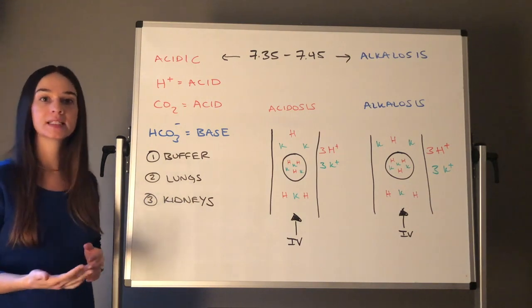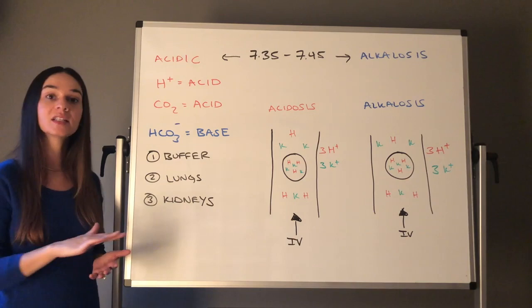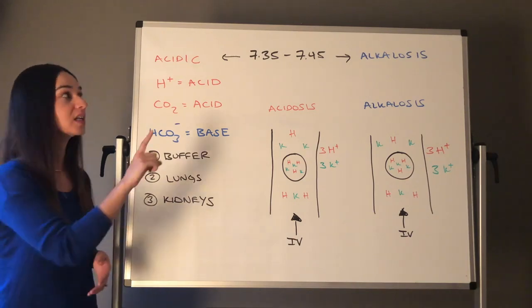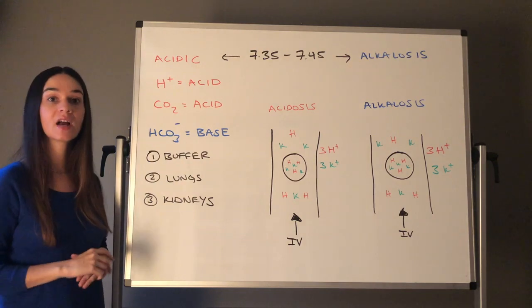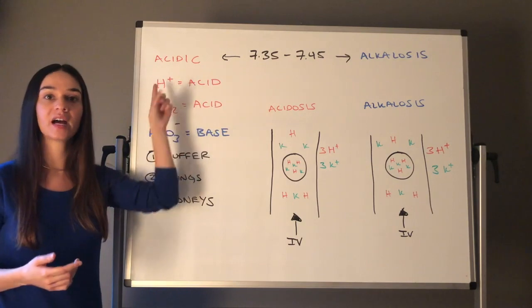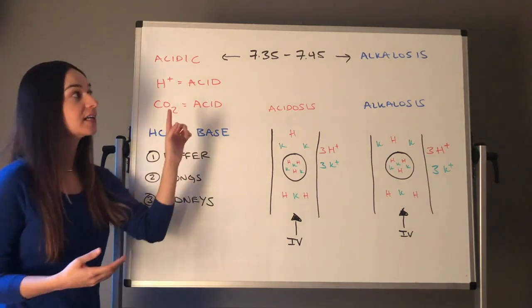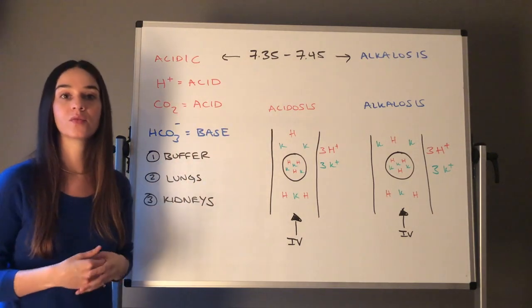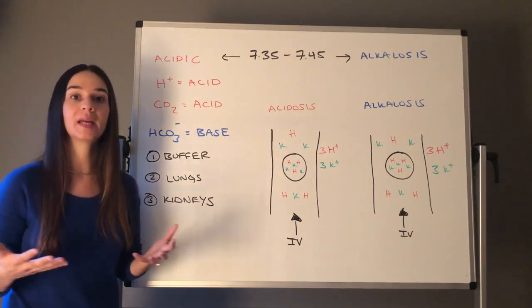Very quickly, we should understand that our blood pH is believed to be in homeostasis when it is between the levels of 7.35 to 7.45. If it gets less than 7.35 it's becoming acidic in nature. If it gets above 7.45 it's become alkalotic in nature or more basic.